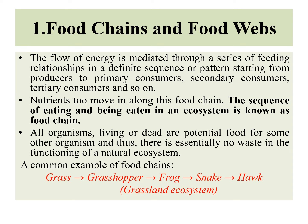The second important factor of the food chain is that nutrients also move along this food chain. Thus, this nutrient flows from the first trophic level to the higher trophic levels, and all organisms, living or dead, are potential food for some other organism. Thus, there is no wastage in the functioning of a natural ecosystem.